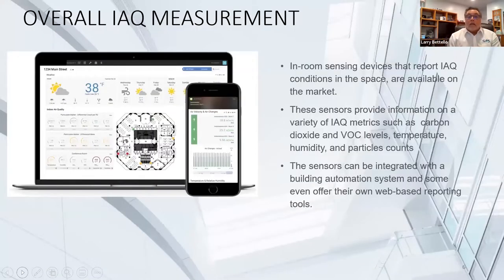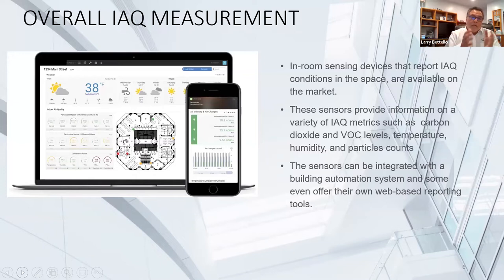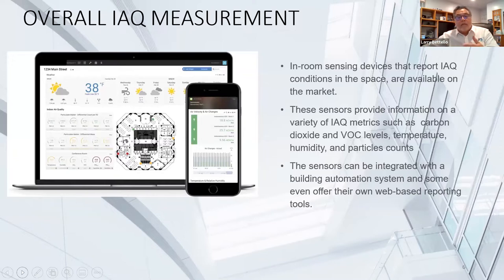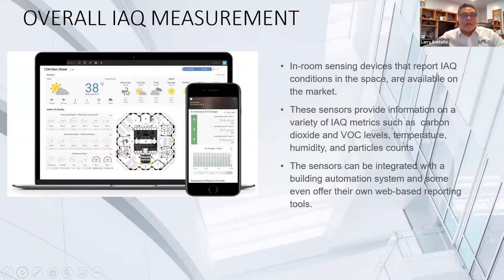The capability to measure indoor air quality exists; it's just that no one really has it yet. Larry believes that in the future there will be a dashboard people use to know the quality of the space where they spend most of their time. He shows a snapshot of a company called Senseware that monitors indoor air quality — particulates, CO2, mold, and many other factors — with other similar systems available as well.